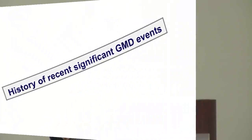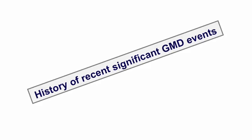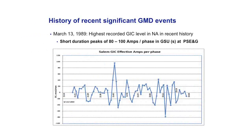There is a scale called the K scale, from 1 to 9, with 9 being the highest. The latest significant event in North America occurred on March 13, 1989. Public Service Electric and Gas in the northeast United States saw the highest currents — a signature of levels around 20 amps up and down, with very high peaks of 80 to 100 amps every now and then.